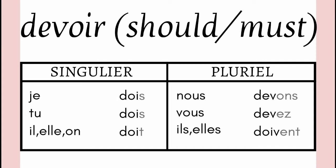Now just see the irregularity in this verb. In je, tu, il, elle and ils, elles plural, the radical is D-O-I. Whereas in nous and vous, the radical is D-E-V. And the endings are S, S, T, ONS, EZ, ENT. But you really have to be conscious about the radical which is changing with the subjects.